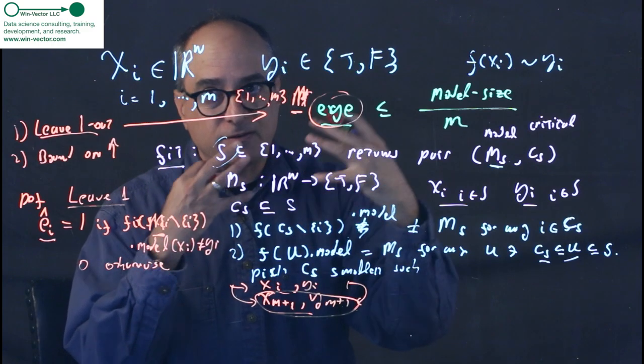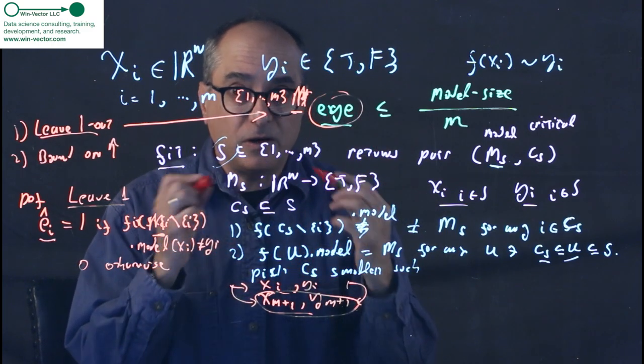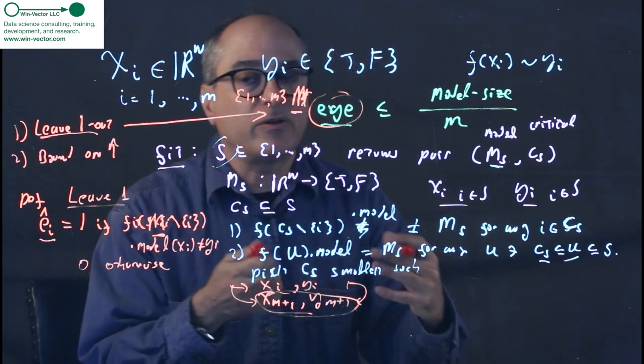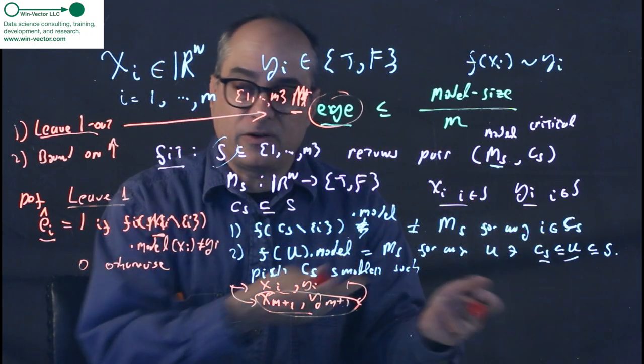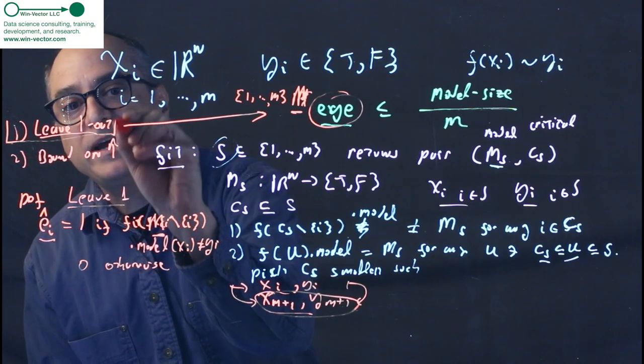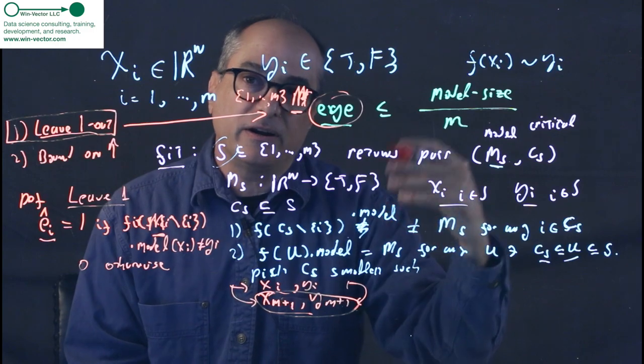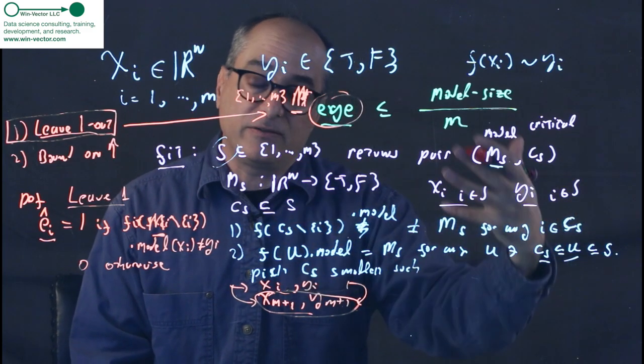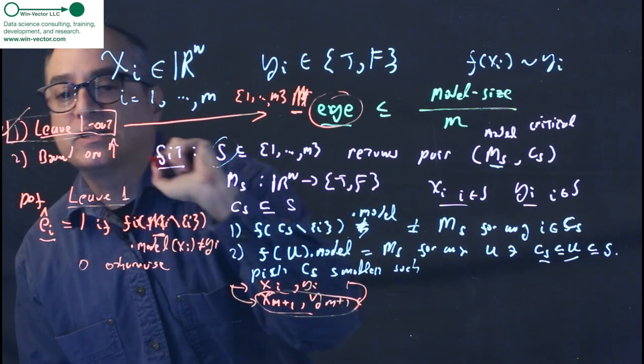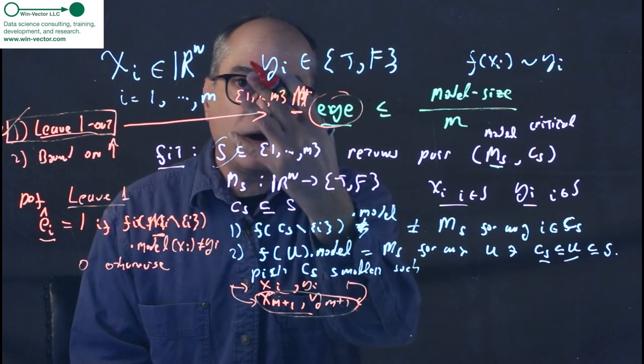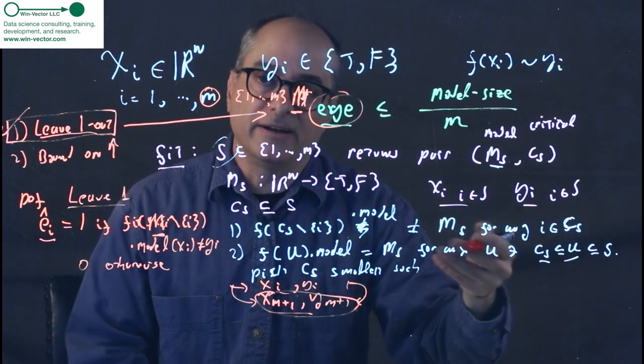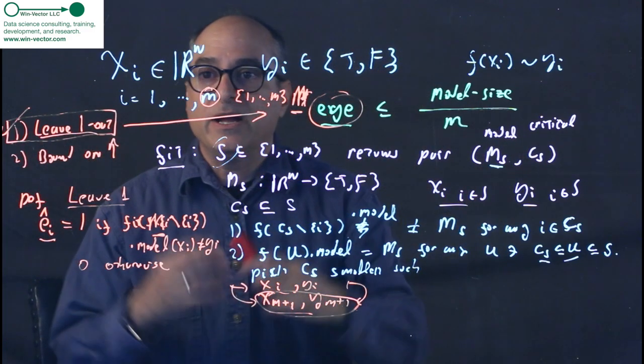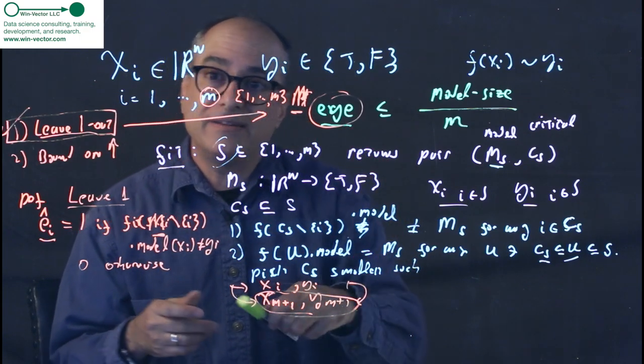So the leave one out under fairly mild assumptions, and we do require some assumptions, estimates the error rate on an alien row we've never seen correctly in expectation. Now it is a somewhat bad estimate because all of these experiments, even though they're correct in expectation, are highly correlated with each other, so we don't get a good estimate on the variance. So we don't know how reliable the leave one out estimate is. We know in expectation it's right, but we don't know whether we're one of the universes where we had a bad result or we're one of the universes where the result was good. However, this is a standard argument. We can estimate the generalization error or excess generalization error of the model on future data by a leave one out argument, arguing that the left out rows could be exchanged with a future row we've not seen, thus simulating out of sample performance. So that's a standard argument. Now, the only reason we don't run that is this requires running the entire modeling procedure m times over again. That's incredibly expensive. If the modeling procedure takes a minute and this is a million rows, then this is a million minutes. So we don't want to use the leave one out modeling procedure even though it's correct because it's very time expensive.